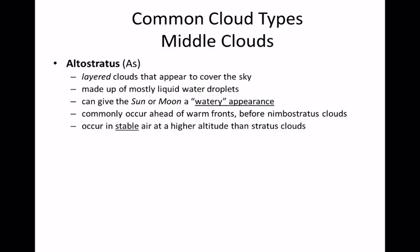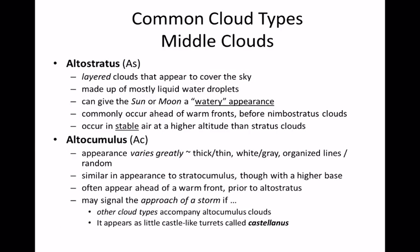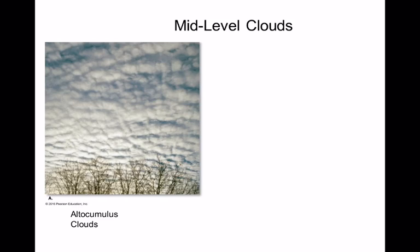So those are our precipitating clouds — nimbostratus and cumulonimbus. Then we have two middle-layer clouds, which must have the word alto. We have a middle flat (altostratus) and a middle fluffy (altocumulus). Anytime you have a flat cloud, it's relatively stable air; anytime you have a fluffy cloud, it's unstable. With middle clouds, the fluffs should be about the size of your thumb.